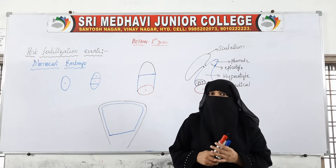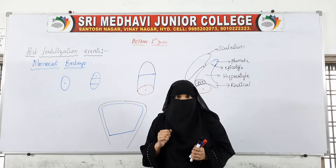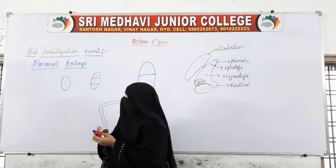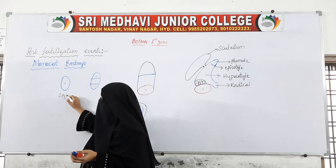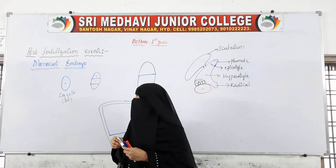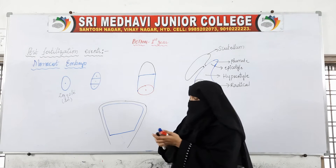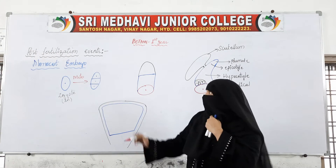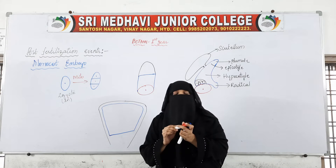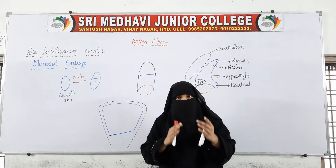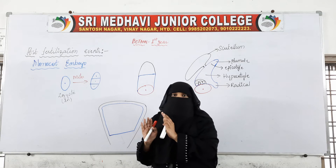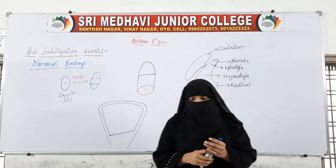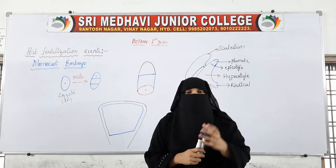After the endosperm is formed, the zygote starts undergoing changes. By taking nutrition from the endosperm, this diploid zygote will undergo mitotic divisions. Meiotic divisions will be seen only during the formation of gametes. After the zygote is formed, it repeatedly undergoes mitotic divisions until it becomes an individual plant.